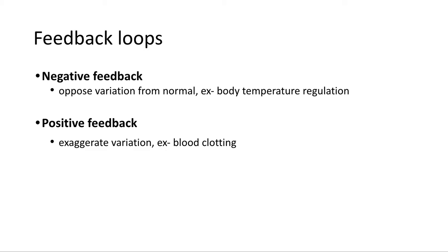There are two types of feedback loops: negative and positive. Everything we discussed so far was a negative feedback loop. Negative feedback loops oppose variation from normal — if you get too hot, your body cools you down; if you get too cool, your body warms you up. In either case, you're going against the variation and trying to return to homeostasis. Positive feedback, on the other hand, exaggerates variation.